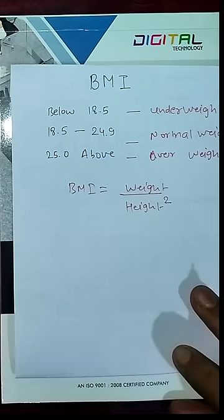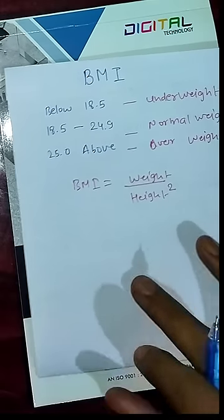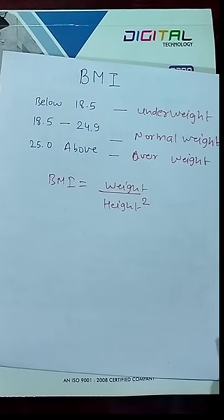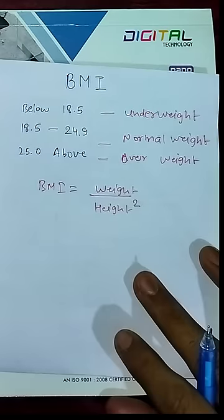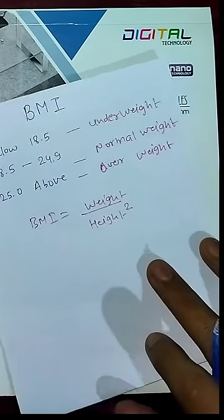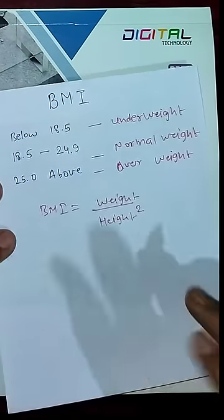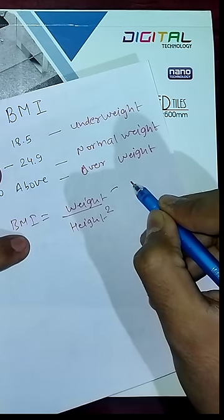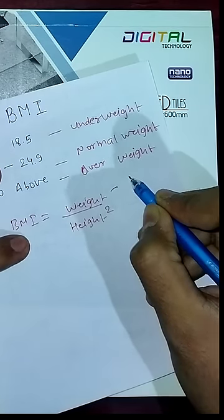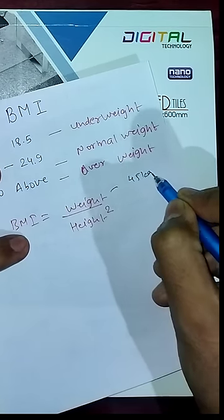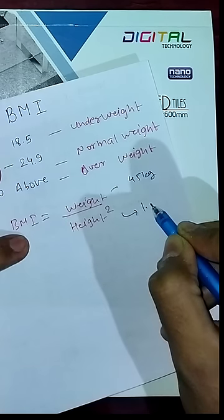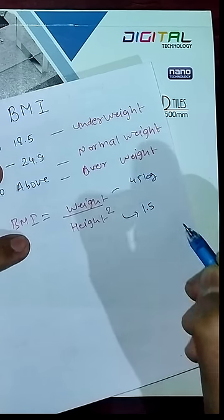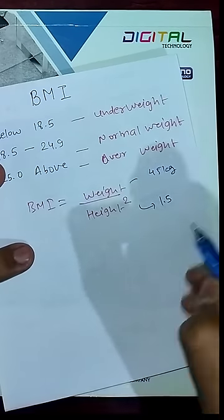There is a formula to calculate BMI: weight divided by height squared, where weight is in kilograms and height is in meters. Let's take an example — say my weight is 45 kilograms and my height is 1.5 meters, which is 150 centimeters.